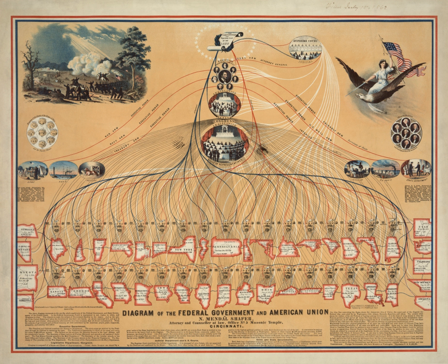Congressional oversight is intended to prevent waste and fraud, protect civil liberties and individual rights, ensure executive compliance with the law, gather information for making laws and educating the public, and evaluate executive performance. It applies to cabinet departments, executive agencies, regulatory commissions, and the presidency.